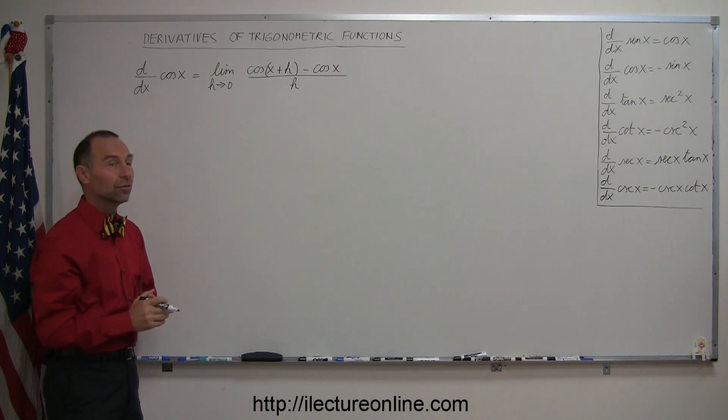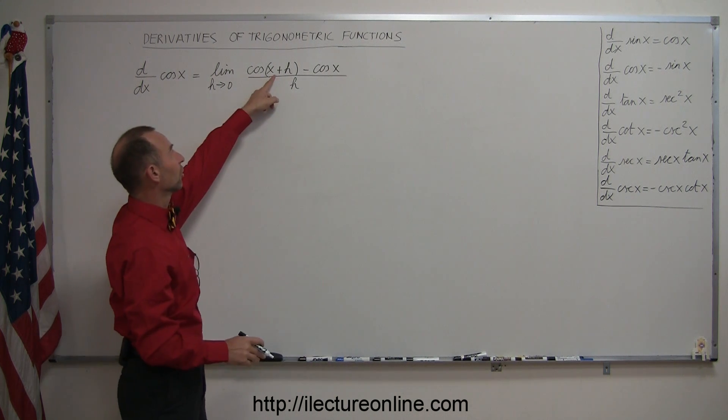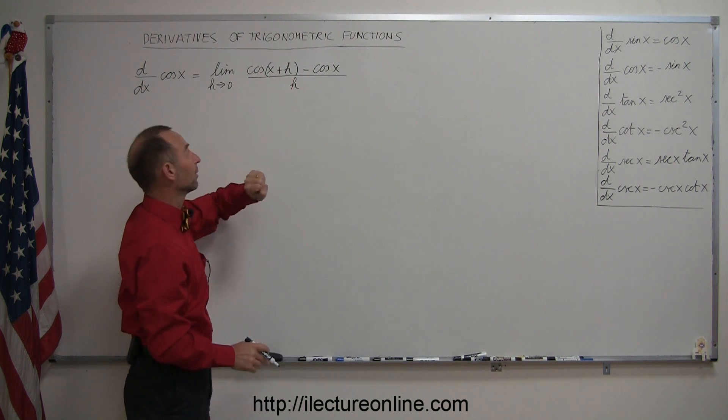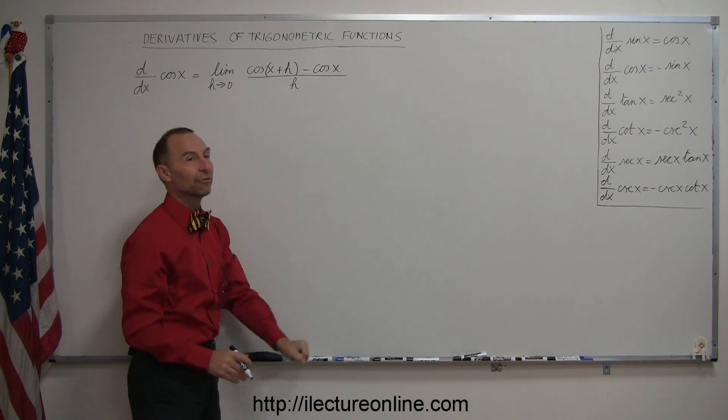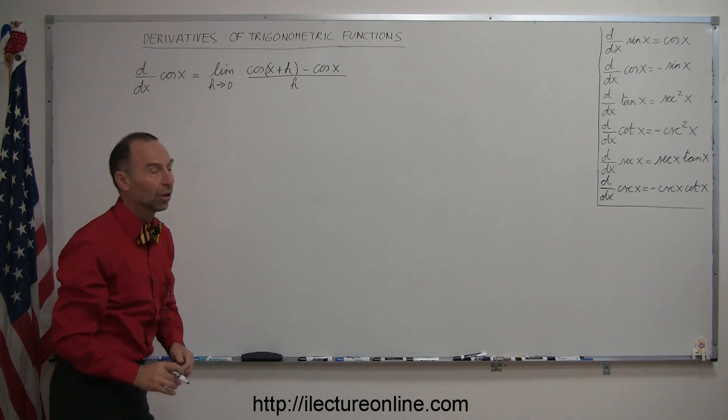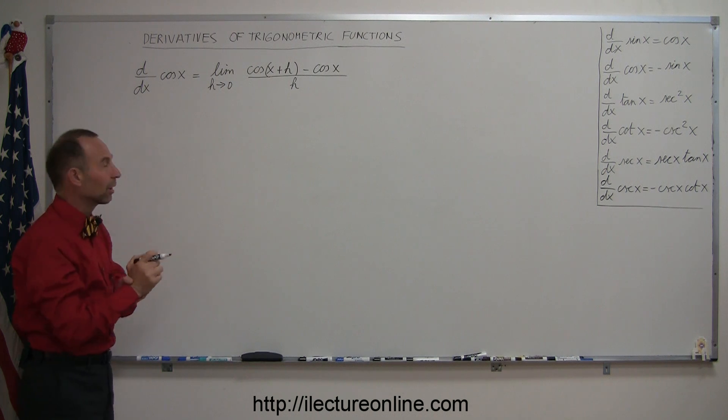By definition, the derivative of any function is equal to the function evaluated at value x plus a small little delta called h minus the function evaluated at x, all divided by the small change h. Let's evaluate that to get the derivative of the cosine of x that way.